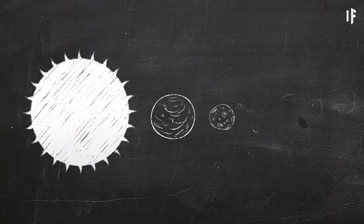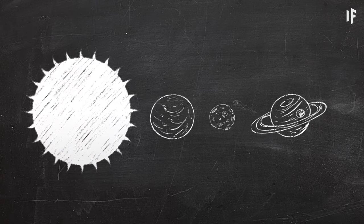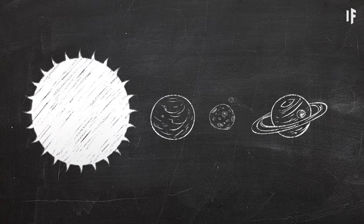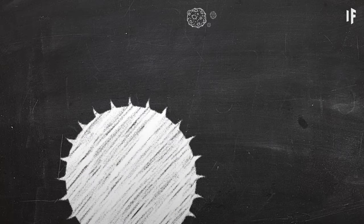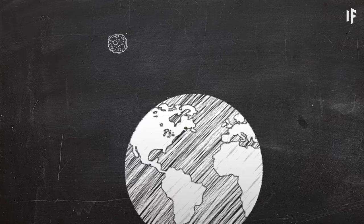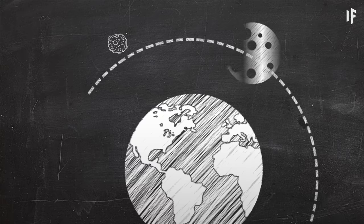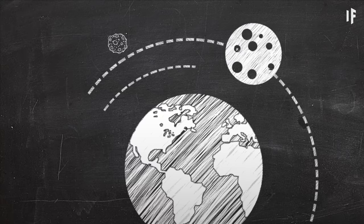The distance of the Roche limit depends on the size, mass, and density of the two objects. For instance, the Sun rips up comets that come within 1.3 million km of it. The Earth will tear apart an average-sized comet from approximately 18,000 km away. For the Moon, the Roche limit would be about 9,500 km.